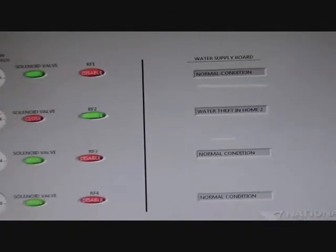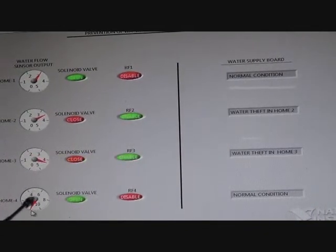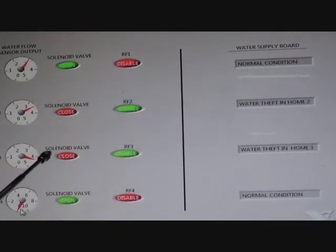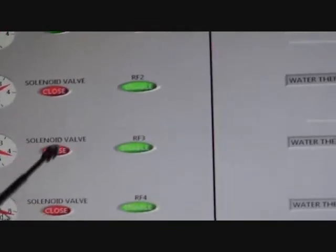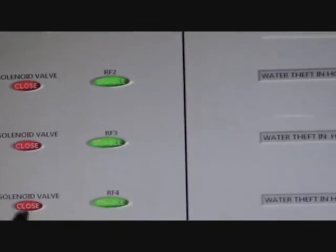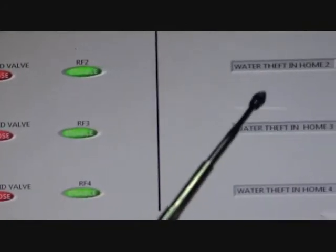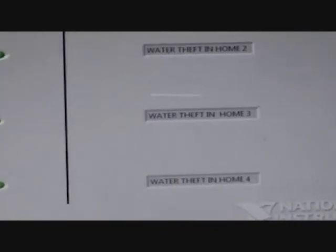Similarly by varying the flow in home 3 and home 4 we can see the status of the solenoid valve gets changed and the signal is transmitted to the water supply board from the RF transmitter as water theft in home 3 and home 4. Thank you.